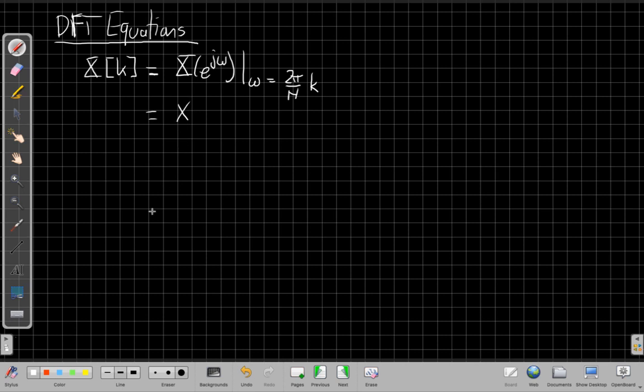If we do that, we can come up with the equation and say that if I have x of e to the j omega, I can just write it using my sum of x of n e to the minus j omega n. And I'm going to evaluate that sum at omega equals 2 pi over n k. So that means I'm going to take this frequency and plug it in up here for omega.